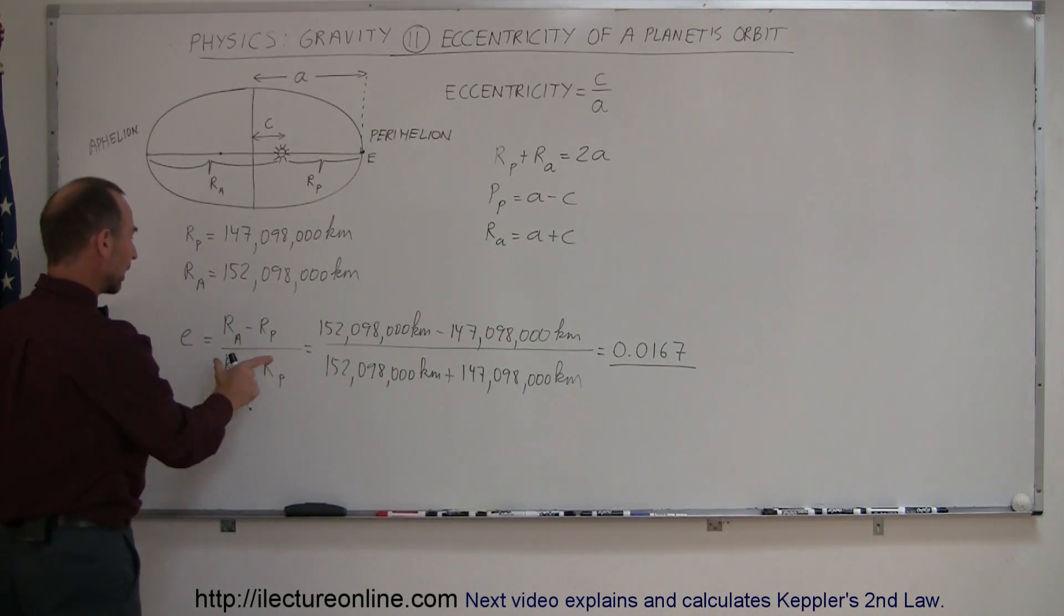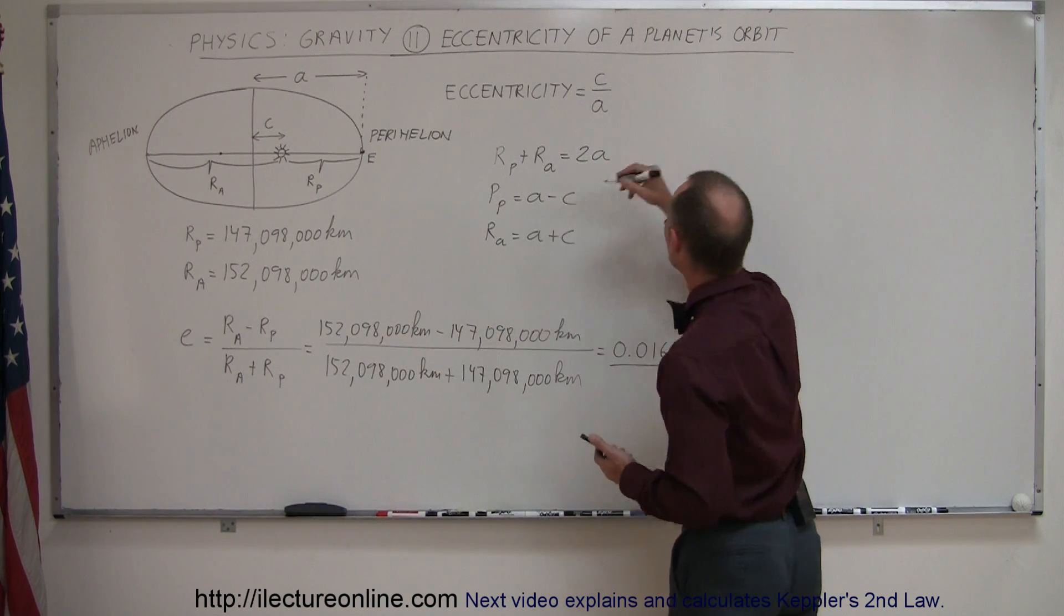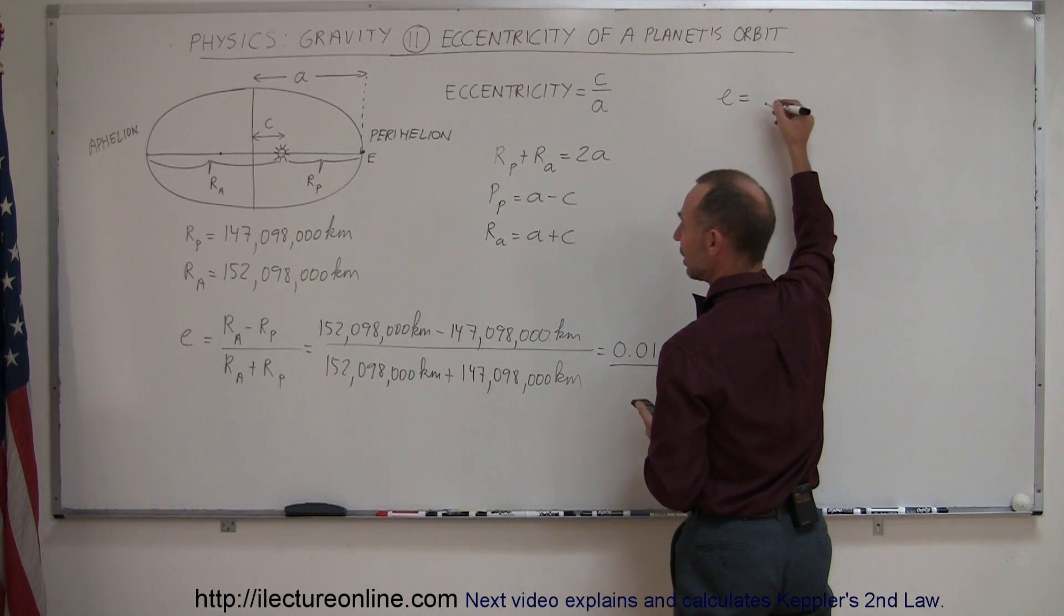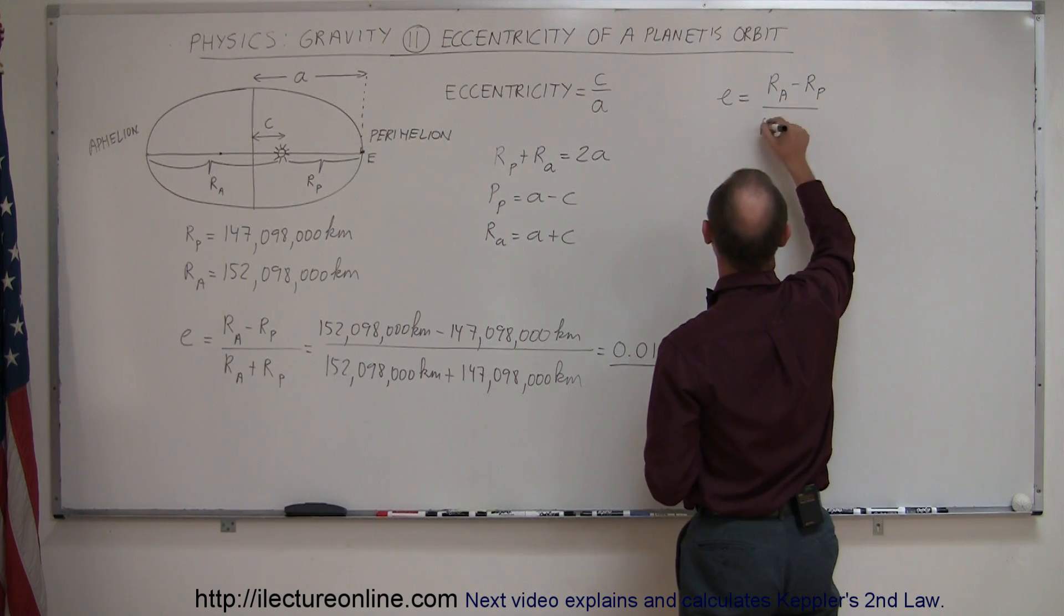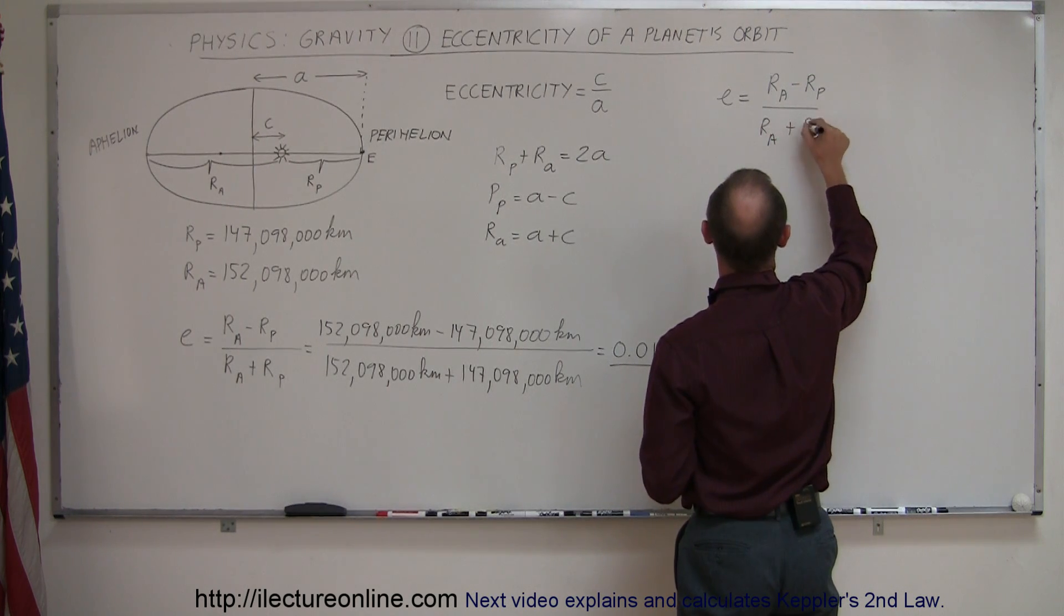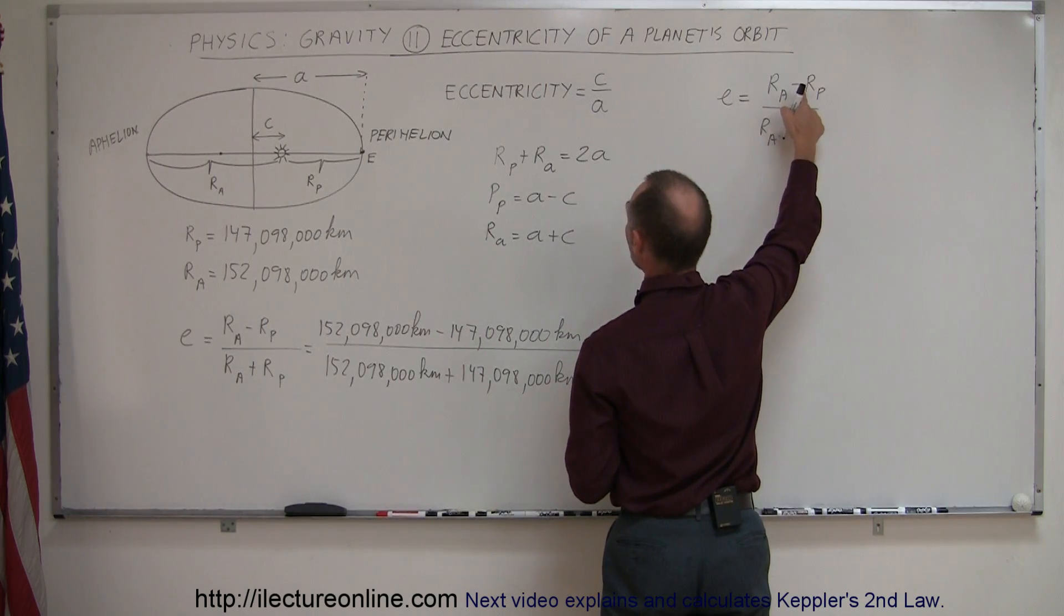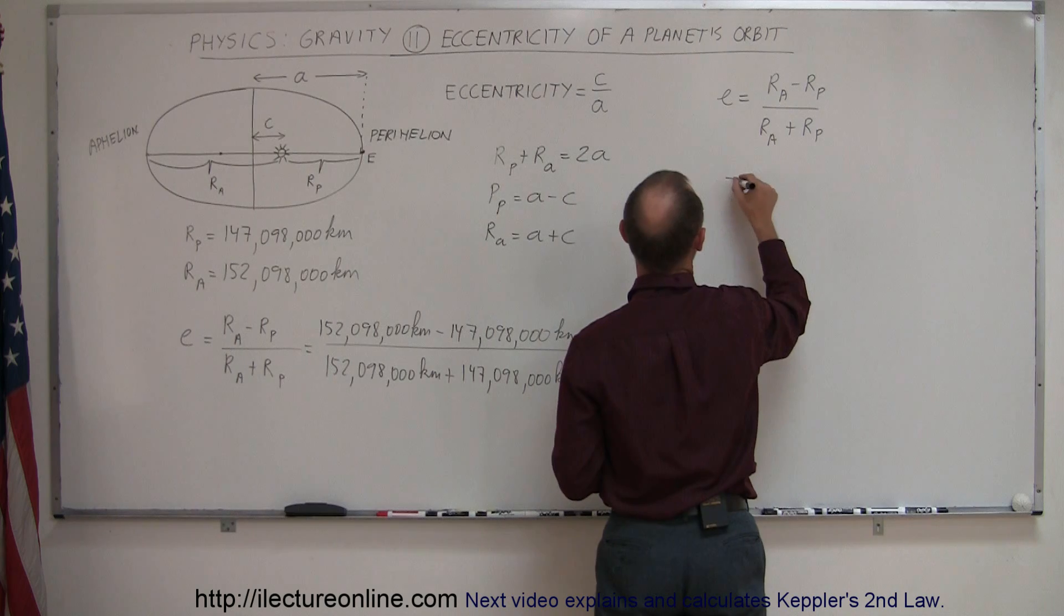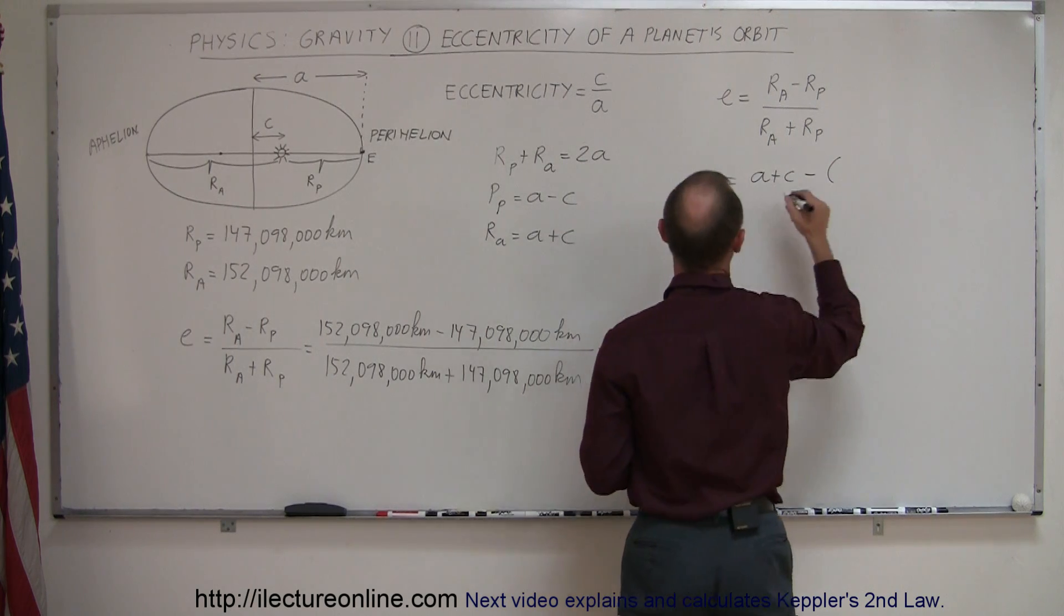Using that information, let's plug that in. Starting up again with that equation, we can see eccentricity is equal to R sub A minus R sub P divided by R sub A plus R sub P. R sub P is A minus C, and R sub A is A plus C. So this is equal to A plus C minus R sub P, which is A minus C.